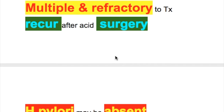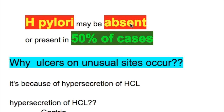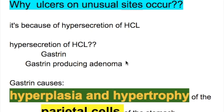What are the properties of Zollinger-Ellison syndrome ulcers? The ulcers are multiple and are refractory to treatment; they recur after acid surgery. H. pylori may be absent or present in only 50% of cases. Ulcers develop on unusual sites because of hypersecretion of HCl.